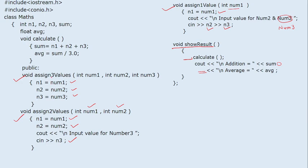So we have three different member functions: 'assign_three_values' takes three parameters; 'assign_two_values' takes two parameters, assigns them to n1 and n2, and reads the third value from the keyboard; 'assign_one_value' takes one parameter and reads two values from the keyboard. Then 'show_result' calls 'calculate' to compute sum and average, and displays them.